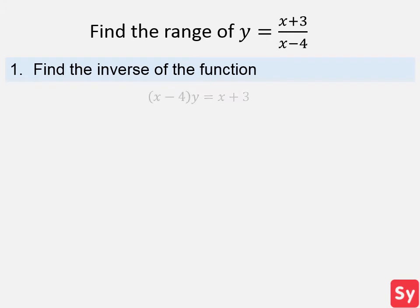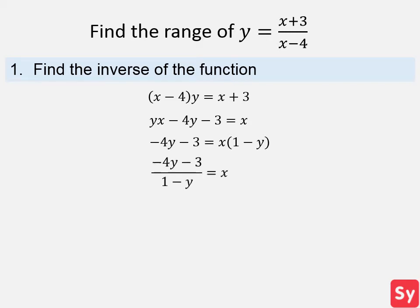We multiply the denominator to both sides and subtract 3 from both sides. Now we subtract yx from both sides and we can pull out an x on the right side. Next, we divide both sides by 1 minus y. Lastly, we substitute y for x and set it equal to the inverse of y.